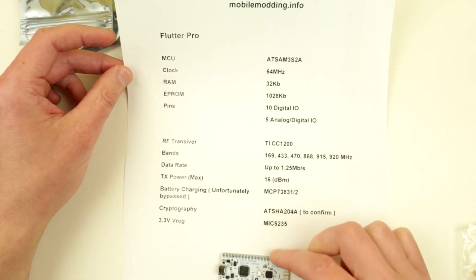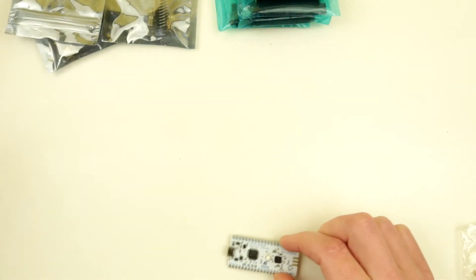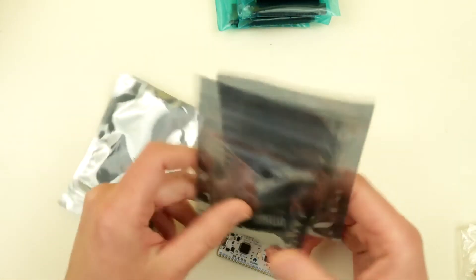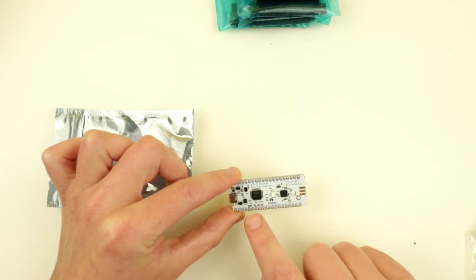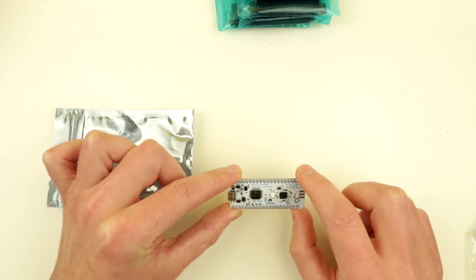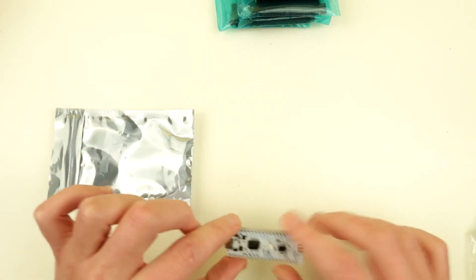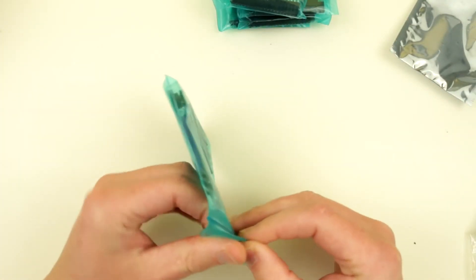Let's see what else we have. This is all identical. I want to mention there is also a basic version of this which has less memory and a different version of this chip, but everything else is pretty much the same, with the PCB antenna instead of stick antenna.